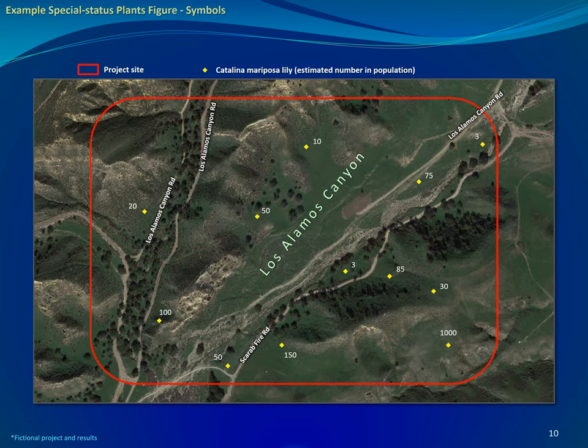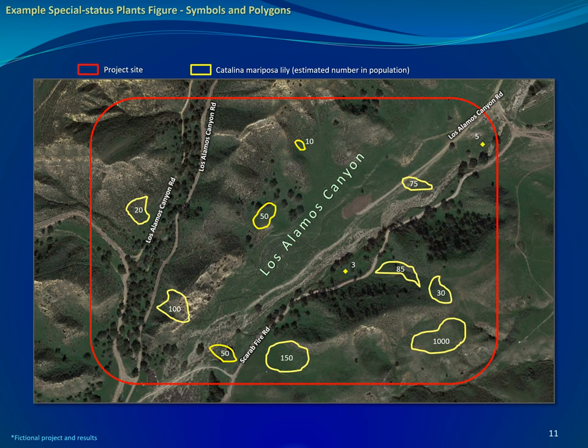Here is an example Special Status Plants figure with symbols for the observations. This fictional project is outlined in red, is located within Alamos Canyon, and each Catalina mariposa lily population is depicted with yellow diamonds. The estimated number in the population is written right next to each diamond. You can also show each plant population as a polygon.